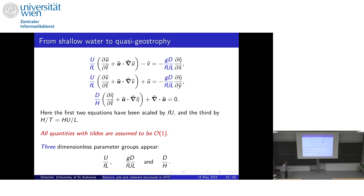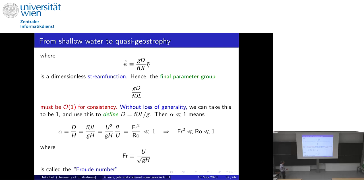You need the flow to be non-divergent so the third equation is consistent with the first two — because I'm striking out those two equations, the flow must be non-divergent. A lot of people avoid potential vorticity altogether and just write an equation for each variable. I like PV — maybe I like it too much — but it's a key variable, so we're going to continue with that.